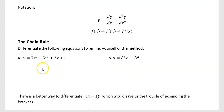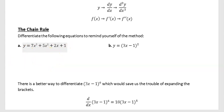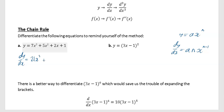Before we get on to the chain rule we're going to look at how we would have differentiated these two examples. So in the first one your dy by dx is found by differentiating term by term. If y equals ax to the power of n, then dy by dx equals nax to the power of n minus 1. So differentiating 7x³ gives 21x², 5x² gives 10x, 2x gives 2, and the constant 1 gives 0. So dy by dx equals 21x² plus 10x plus 2.